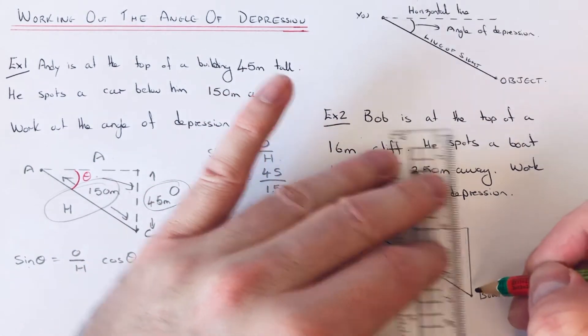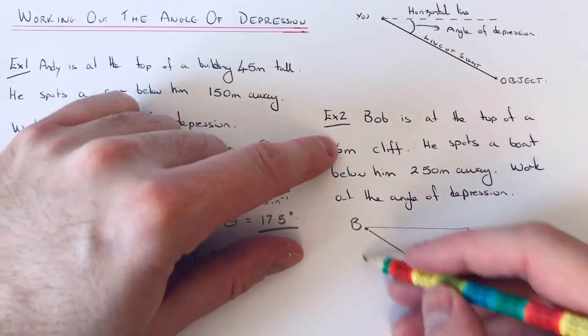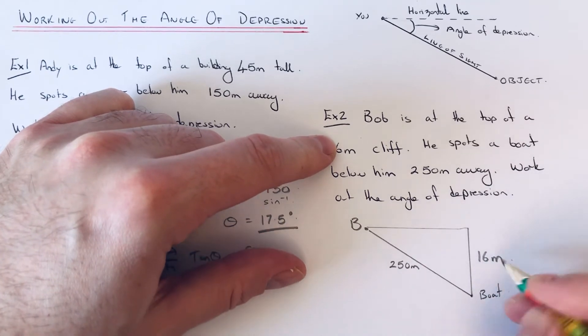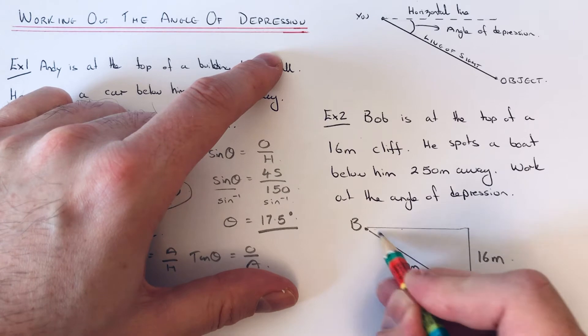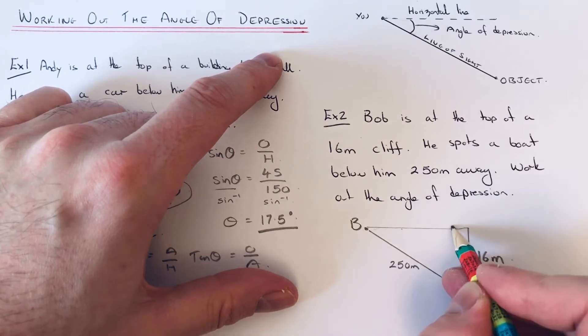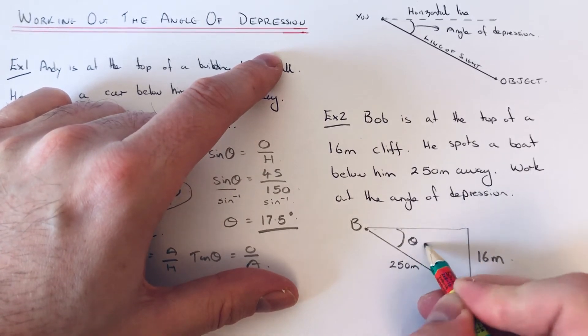So our height of our cliff is 16 meters, so that's the same as this distance. And the angle of depression is the angle between the direct line of sight and the horizontal. So that is theta.